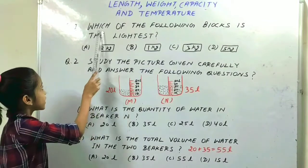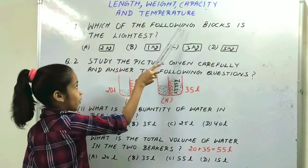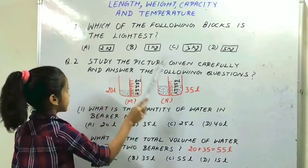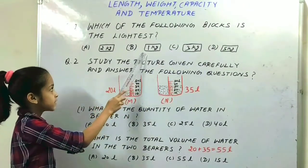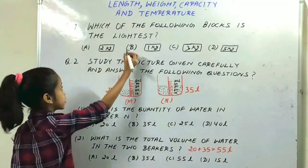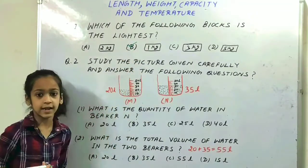Our first question is: which of the following blocks is the lightest? On option B there is 1 kilogram. Option B is the right option because 1 kilogram is the lightest.